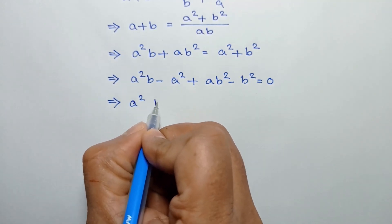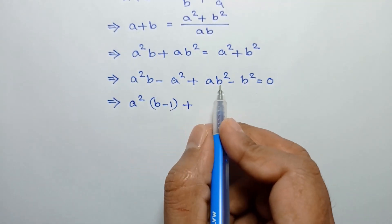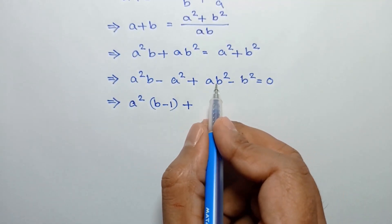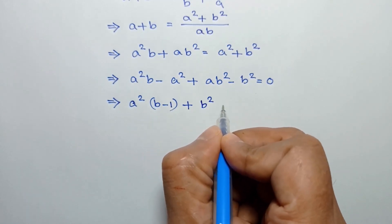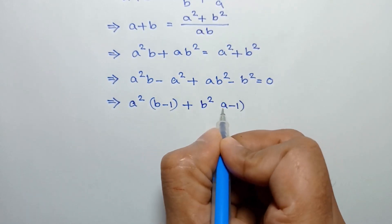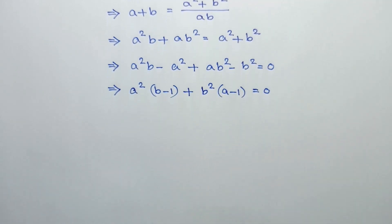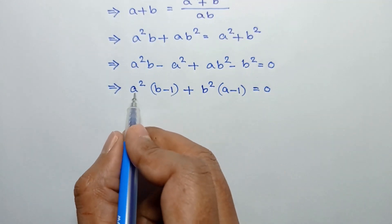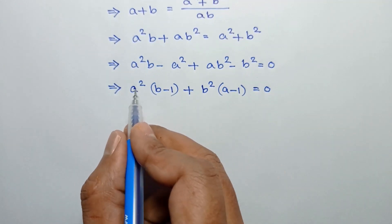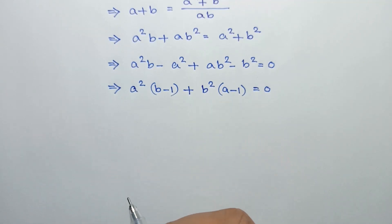Taking a squared common from the first two terms gives a squared times (b minus 1), and taking b squared common from the last two terms gives b squared times (a minus 1), equal to 0. Here a and b are natural numbers, so a squared and b squared are greater than or equal to 1.